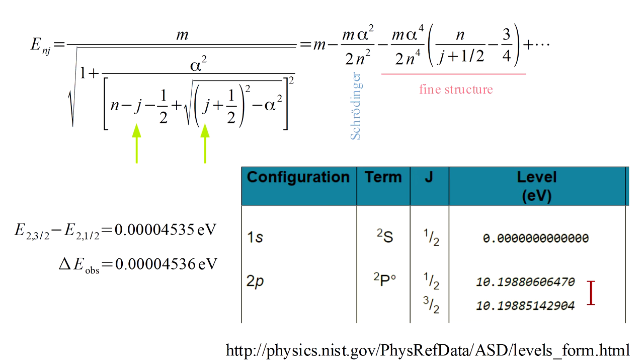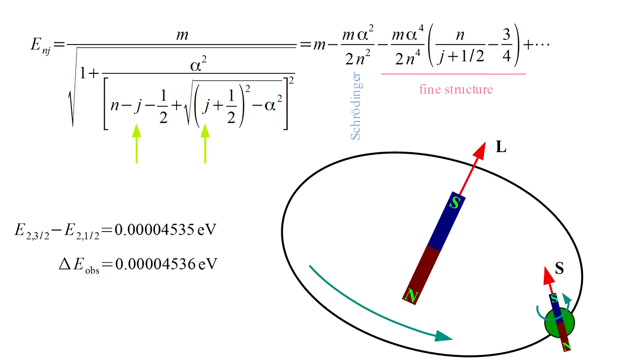So, the Dirac equation accurately predicts the energy difference between a 2p orbital with aligned orbital and spin angular momenta, and a 2p orbital with opposed orbital and spin angular momenta. In the video on spin, we pointed out that the fine structure could be explained by spin-orbit coupling. The electron orbit and electron spin each effectively create tiny magnets. The higher energy state corresponds to these, and the corresponding angular momenta, being aligned, while the lower energy state corresponds to these being opposed. The Dirac equation accurately predicts this effect, without us having to explicitly put it into the equation.